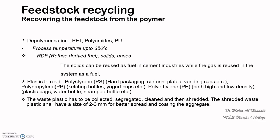In feedstock recycling, the monomer is recovered from the polymer. This can be done for PET, polyamides, and PU. The polymers are depolymerized — broken back down to monomers — and the processing temperature goes up to 350 degrees centigrade. Only polymers whose monomers will not decompose or change properties at 350°C can be used for feedstock recycling.